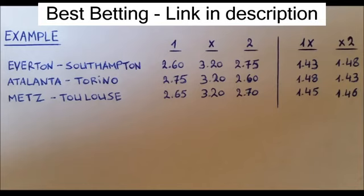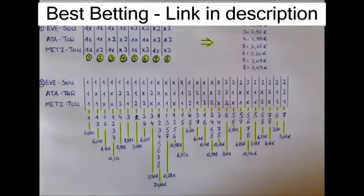So as you can see we have Everton Southampton 2.60 and 2.75, Atalanta Torino 2.75 and 2.60, and Mets Toulouse 2.65 and 2.70. This gives us odds for 1X and X2 which is what we need for the formula as you can see right there.